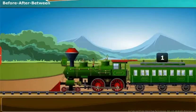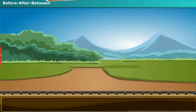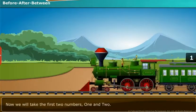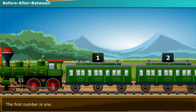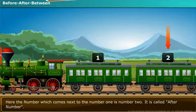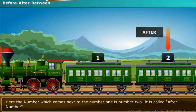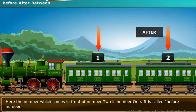Let us know about the number before, after, and between. Now, we will take the first two numbers, 1 and 2. The first number is 1. The next number is 2. The number which comes next to the number 1 is number 2 — it is called the after number. The number which comes in front of number 2 is number 1 — it is called the before number.